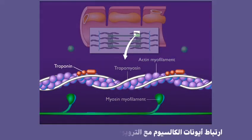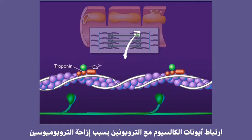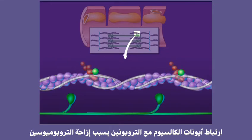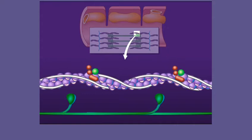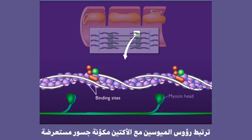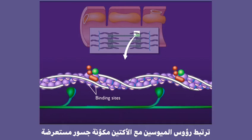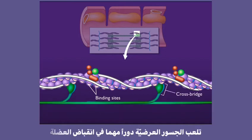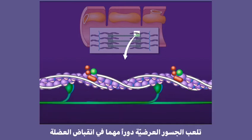When calcium ions bind to troponin, this causes troponin to change conformation and move the tropomyosin. When the tropomyosin moves, this uncovers the myosin binding sites on the actin, allowing myosin heads to bind and form cross bridges. The cross bridges play a role in muscle contraction.